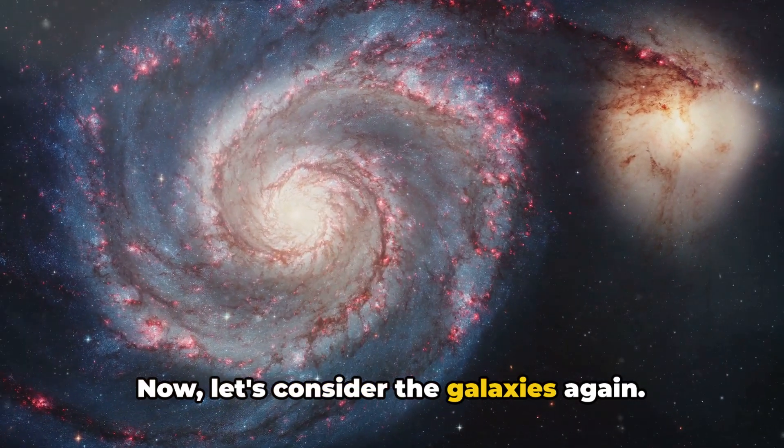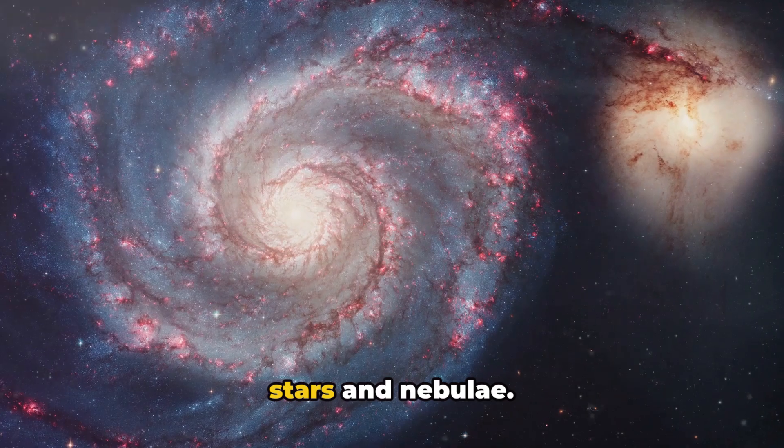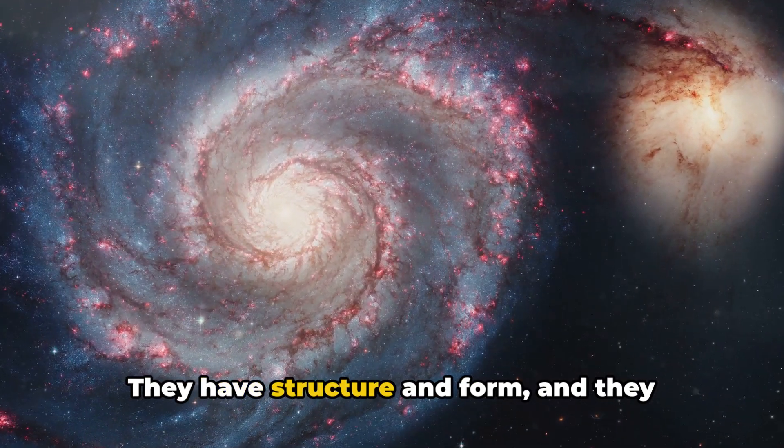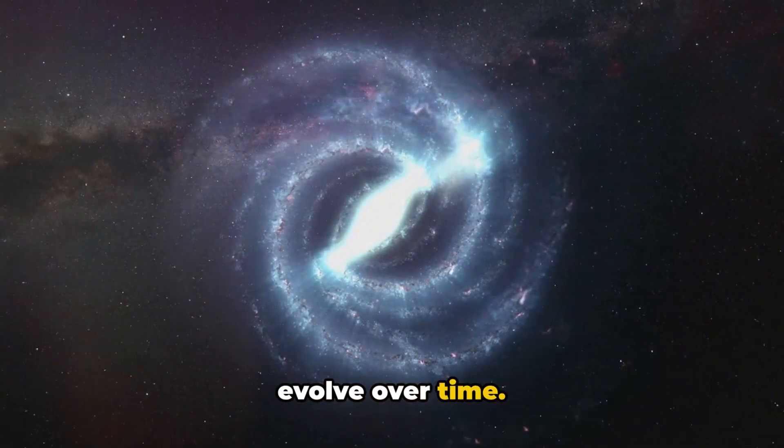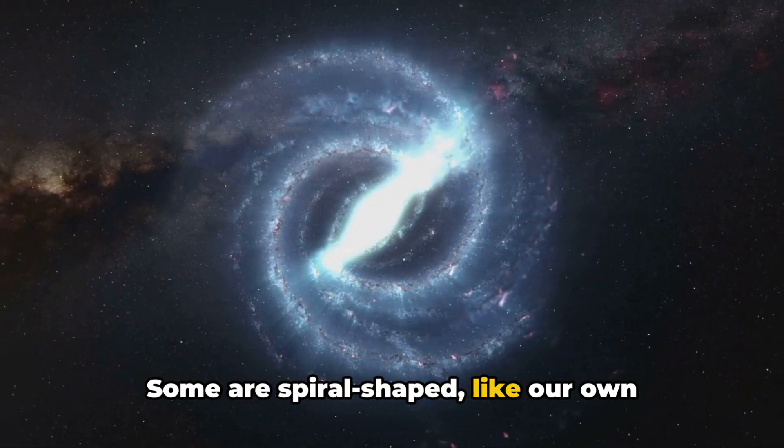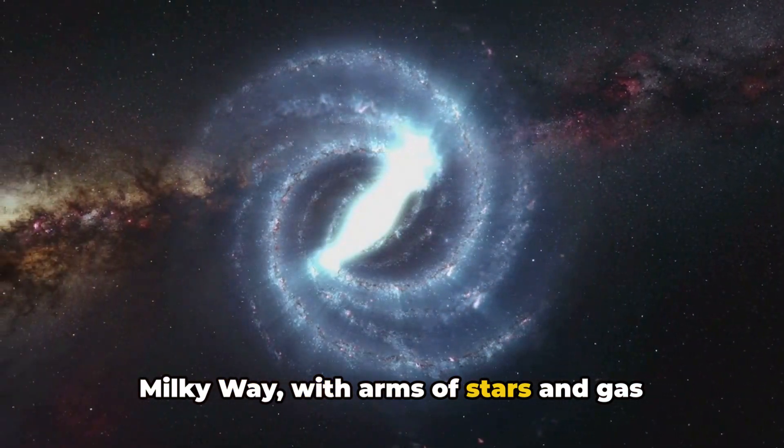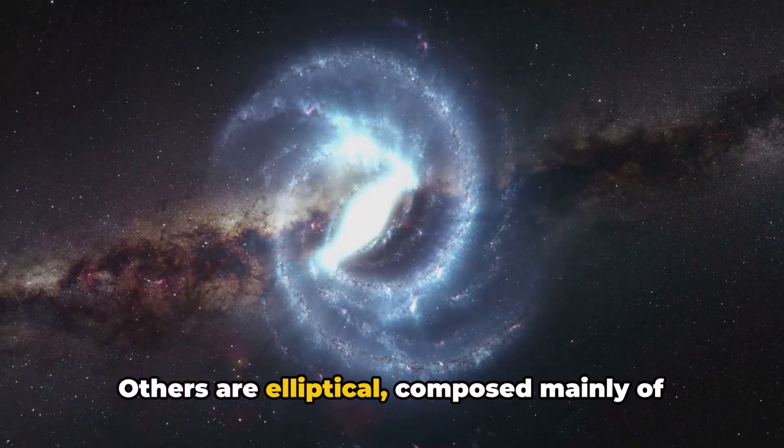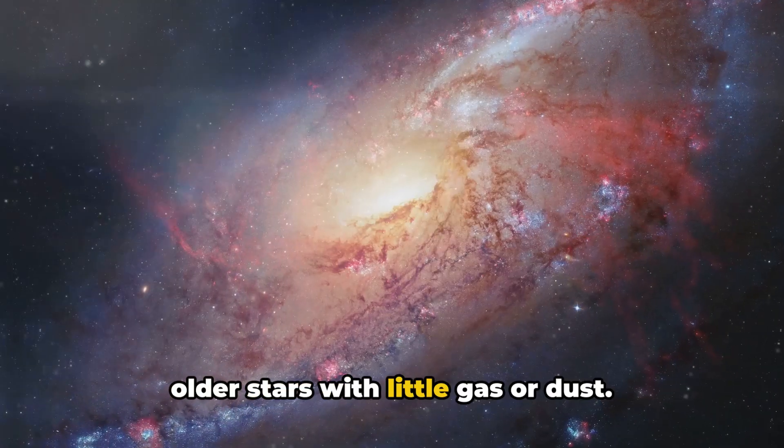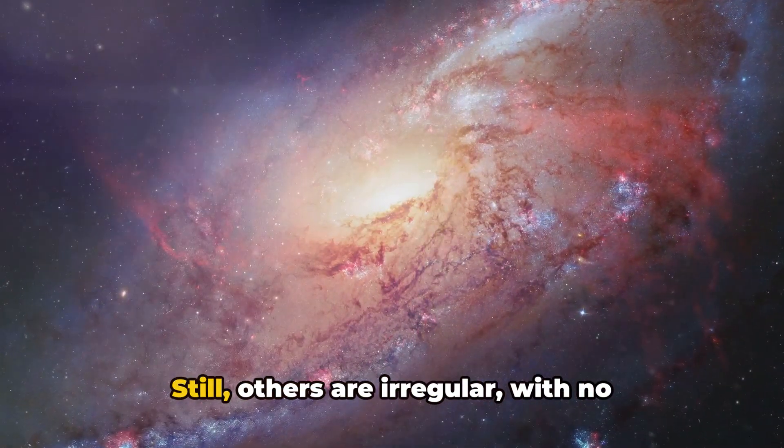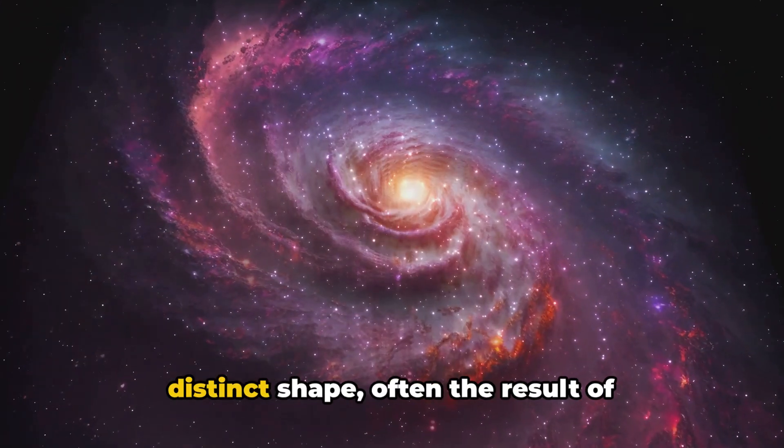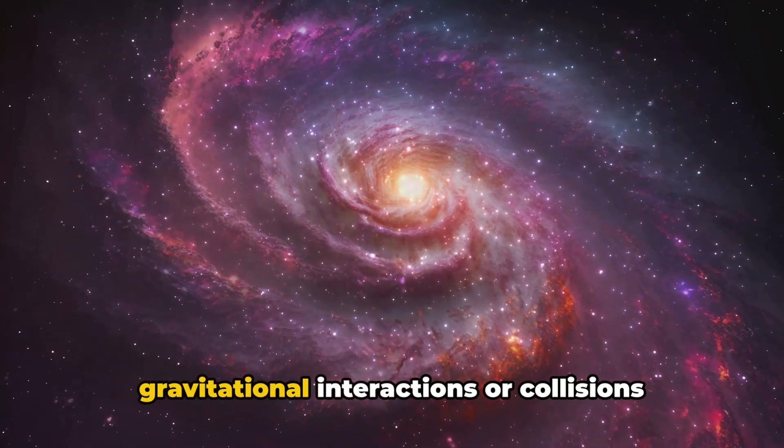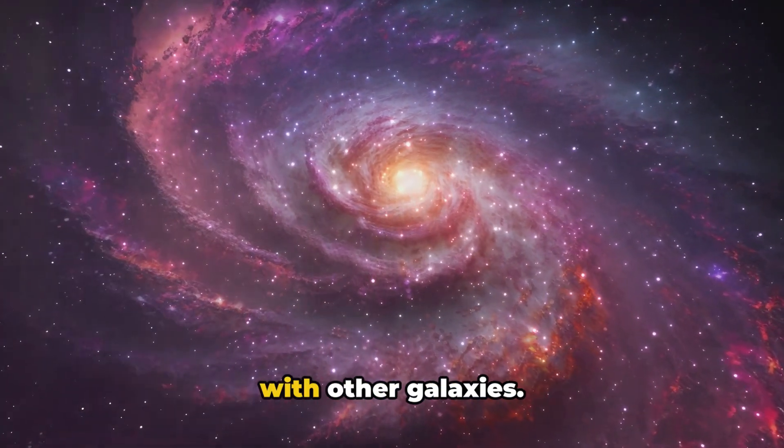Now let's consider the galaxies again. They're not just random conglomerates of stars and nebulae. They have structure and form, and they evolve over time. Some are spiral-shaped, like our own Milky Way, with arms of stars and gas spiraling out from a central bulge. Others are elliptical, composed mainly of older stars with little gas or dust. Still others are irregular, with no distinct shape, often the result of gravitational interactions or collisions with other galaxies.